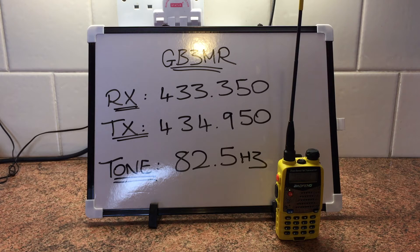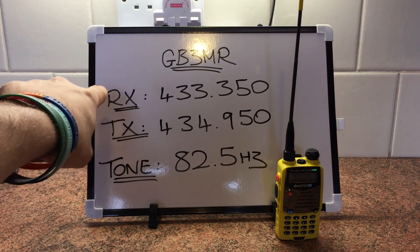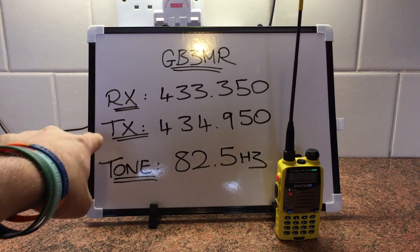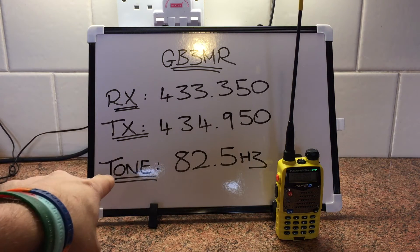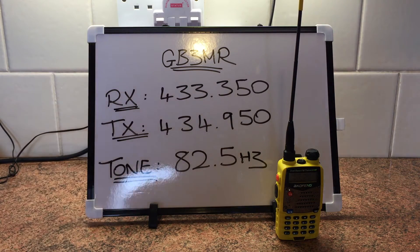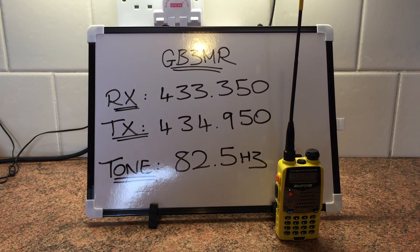First of all the information you need — all you need is the RX frequency, the TX frequency, and the tone that opens the repeater. It's dead easy, that's all you need.